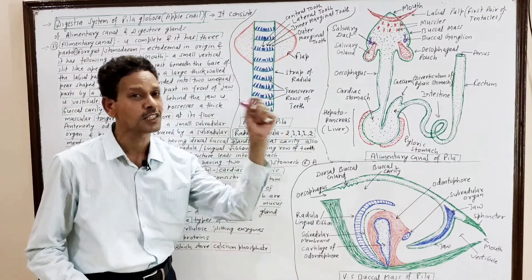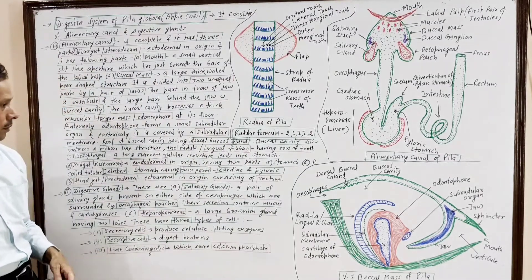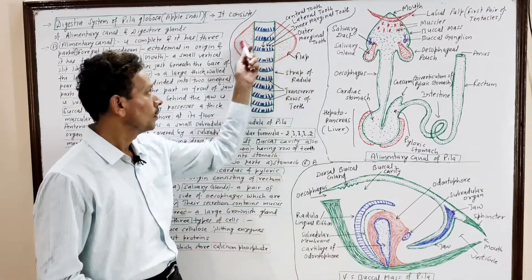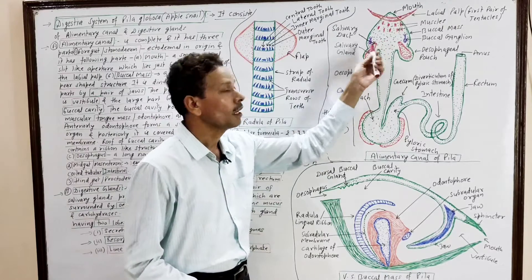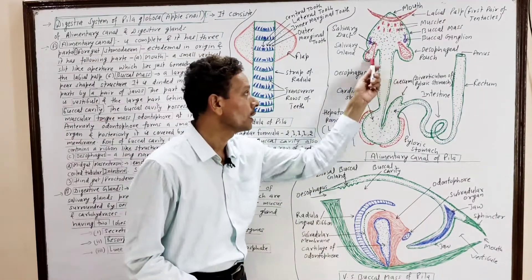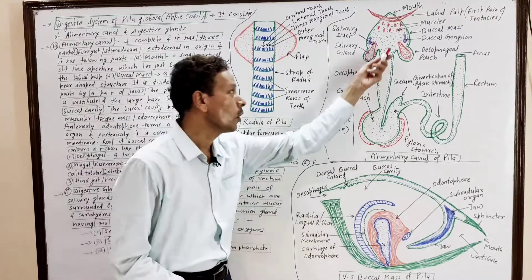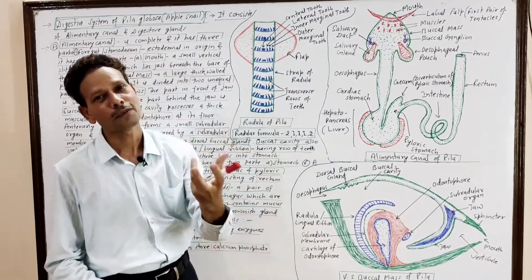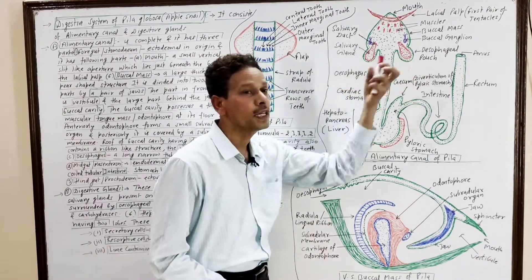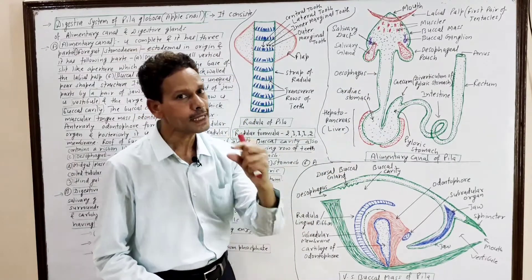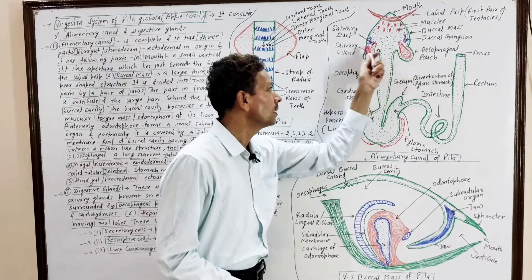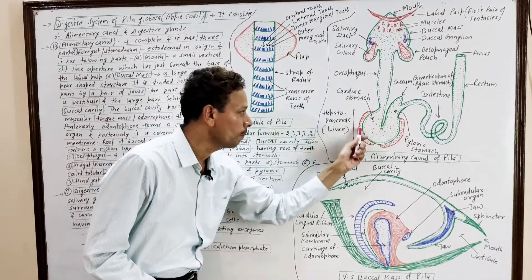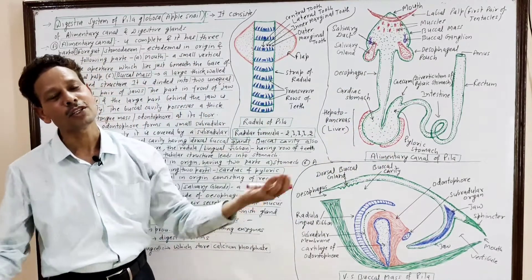This is all about the buccal mass and radula of Pila. The third part of the alimentary canal is the esophagus — the food pipe. It is a long tubular structure. Its anterior part produces a pair of esophageal pouches, which surround the salivary glands. Posteriorly, the esophagus opens into the midgut — the mesenteron, or stomach.